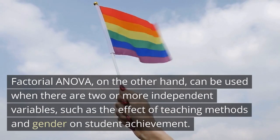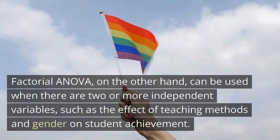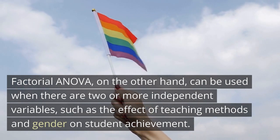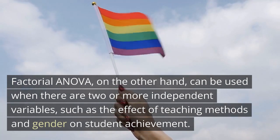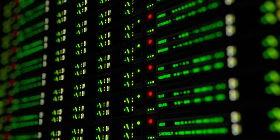Factorial ANOVA, on the other hand, can be used when there are two or more independent variables, such as the effect of teaching methods and gender on student achievement.